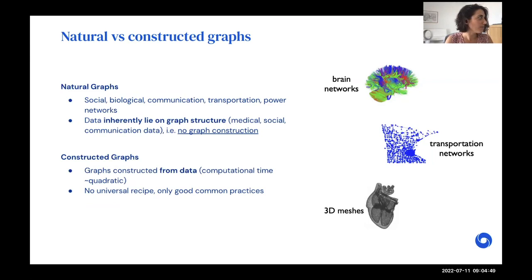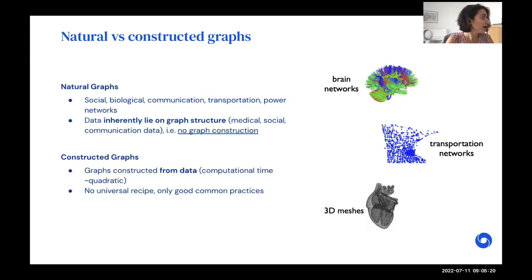An important distinction between classes of graphs is whether these are natural — whether the data inherently lies on a graph structure that we observe, without needing to make explicit decisions about how to construct the graph. These natural graphs emerge in social networks like 'who follows whom', and in biological, communication, and power networks.